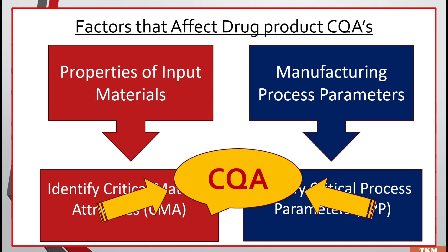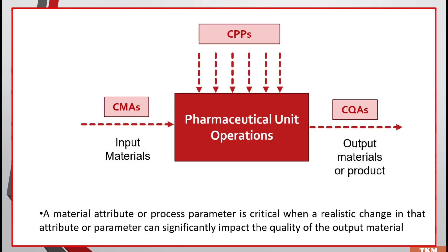The two factors that affect critical quality attributes are critical material attributes and critical process parameters. As seen in this diagram, critical material attributes are the starting material — that's why we consider them as input material. Critical process parameters are the parameters of the manufacturing process, pharmaceutical unit operations. Both affect the critical quality attributes, which is the quality of the output material or product.